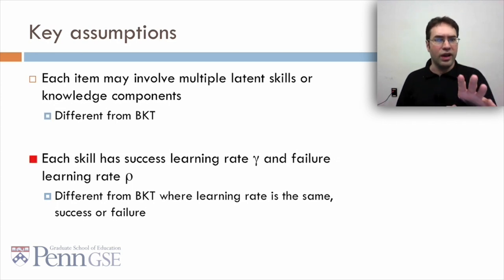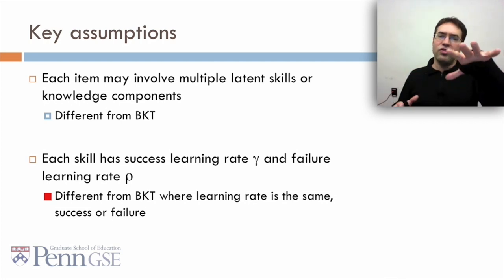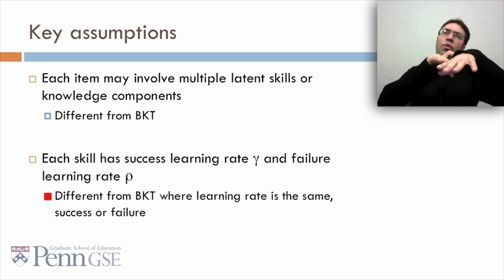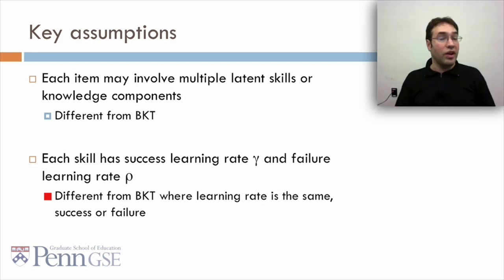Also in PFA, each skill has a success learning rate, gamma, and a failure learning rate, rho. And that's different from BKT, where the learning rate's the same, success or failure. In fact, these success and failure learning rates take into account not just learning, but also they take into account what it means that you've failed or succeeded. So they take into account that you've failed or succeeded, as well as the learning based on those cases.